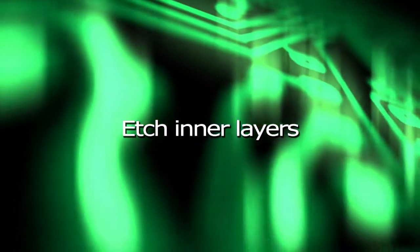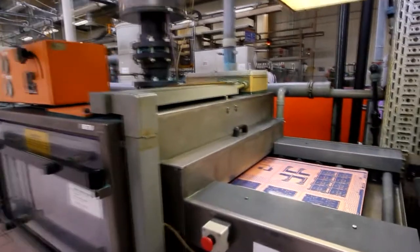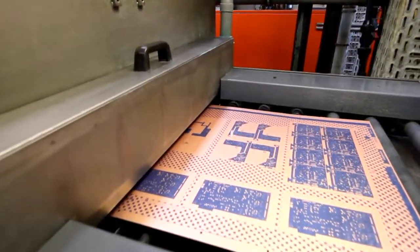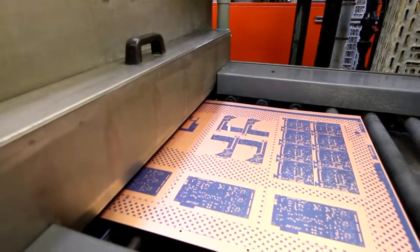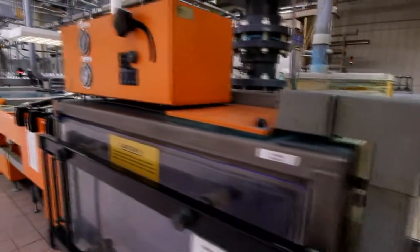Etch inner layers. We remove the unwanted copper using a powerful alkaline solution to dissolve or etch away the exposed copper. The process is carefully controlled to ensure that the finished conductor widths are exactly as designed.